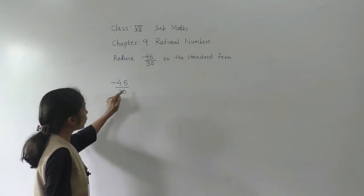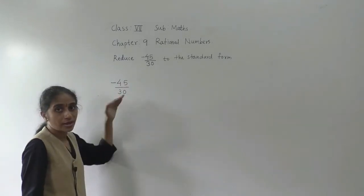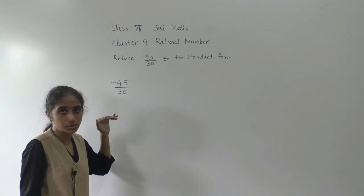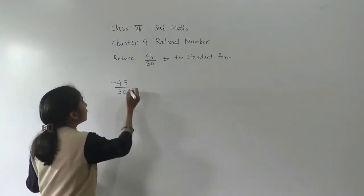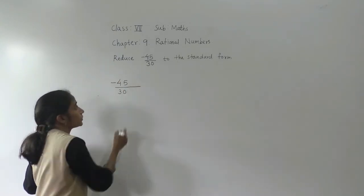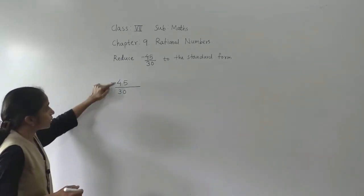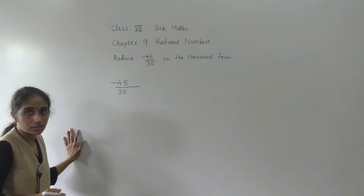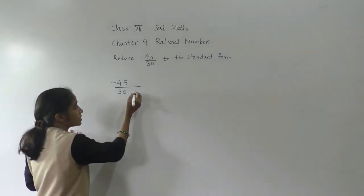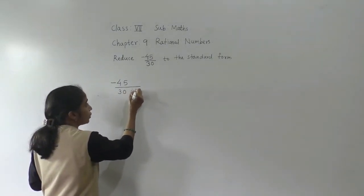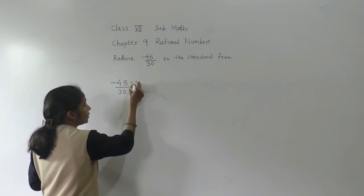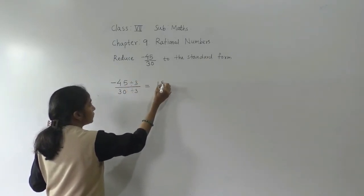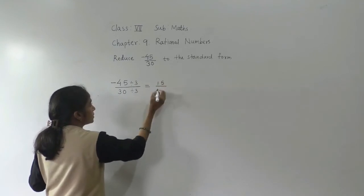We are dividing the numerator and denominator by the same non-zero digit. Both the numbers 45 and 30 are divisible by 3, so we divide both by 3. 3 fives are 15, 3 tens are 30.